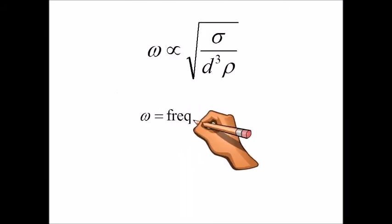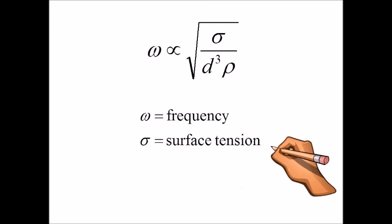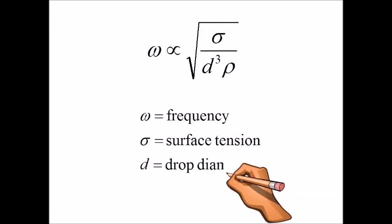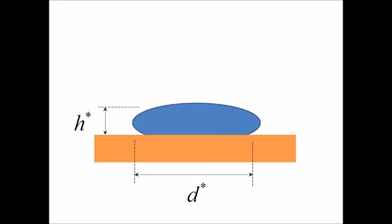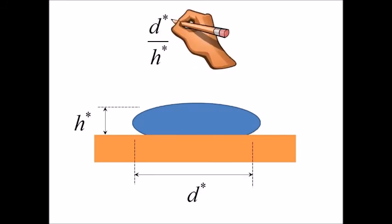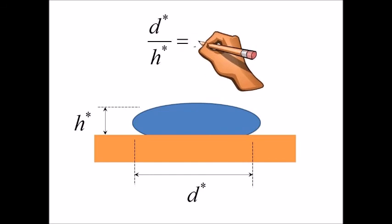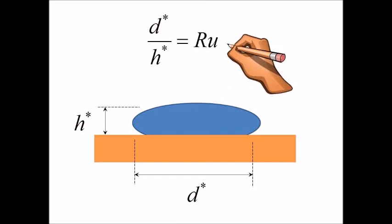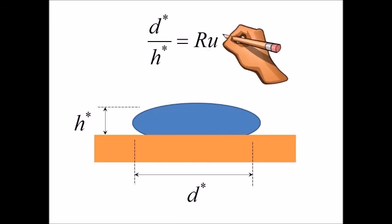This plucking excites resonant mode shapes within the droplet. If this is the case, what are the important variables to consider? The Buckingham Pi theorem shows that many variables influence this phenomenon. For small droplets, surface tension dominates. For larger droplets, inertial forces dominate. We define the dimensionless parameter RU, the Rubenstein number, to characterize droplet size.